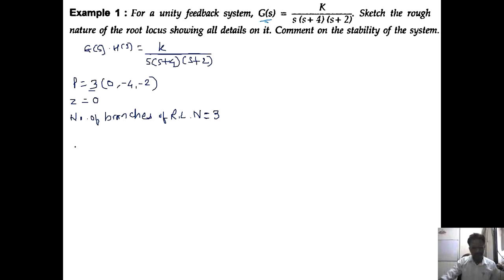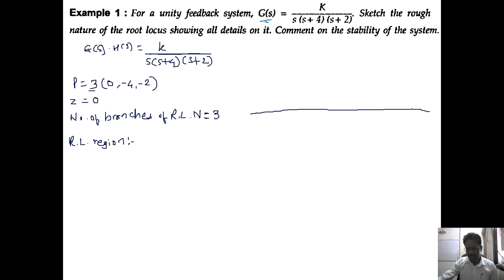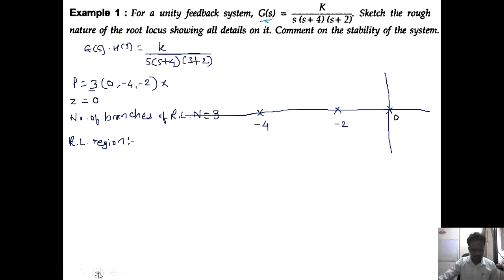Next is the root locus region. I am showing the root locus region roughly — not on graph paper. This is the s-plane. Plot all the poles by cross and zeros by circle. Poles are at 0, -2, and -4. The regions are: infinity to 0, 0 to -2, -2 to -4, and -4 to -infinity.